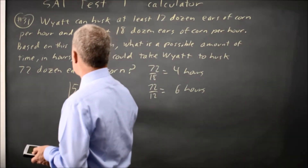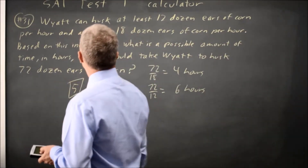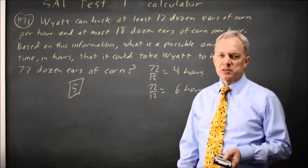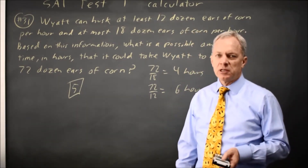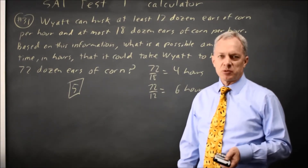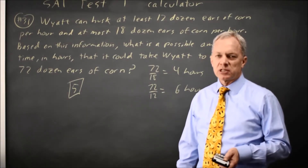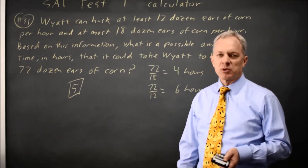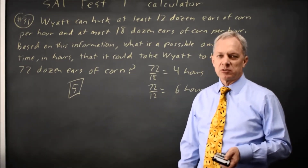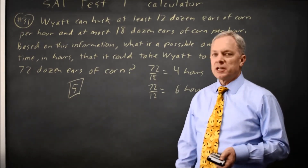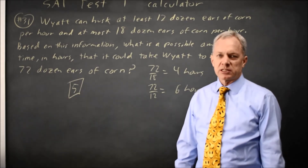I would choose 5. Careful reading would tell me that I'm allowed to choose 4 or 6, or some decimal in between, but I feel more comfortable not pushing my luck on whether the endpoints are less than or less than or equal to. Also, choosing a nice round number makes me less likely to mis-grid it. So I would choose 5, but any answer from 4 to 6 would be correct.